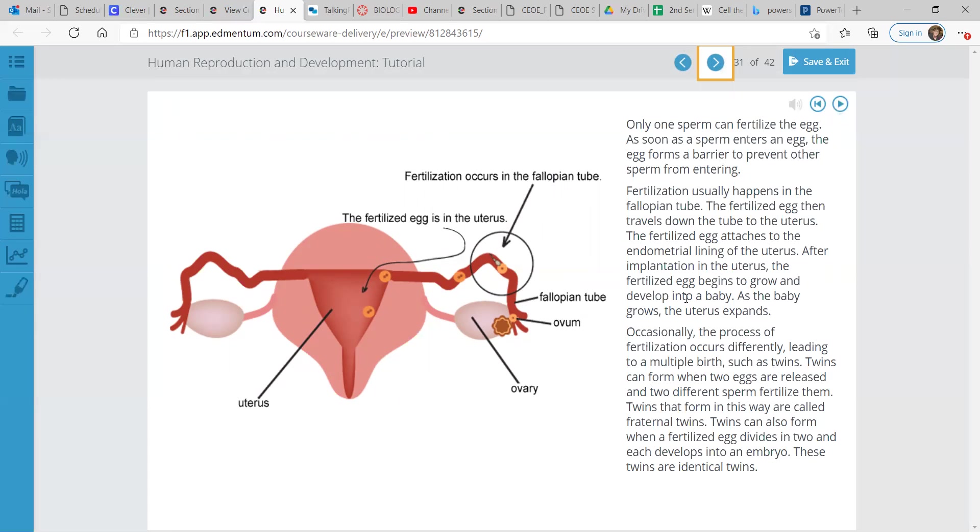As the baby grows, the uterus expands. Occasionally, the process of fertilization occurs differently, leading to a multiple birth, such as twins. Twins can form when two eggs are released and two different sperm fertilize them. Twins that form in this way are called fraternal twins. Twins can also form when a fertilized egg divides in two and each develops into an embryo. These twins are identical twins.